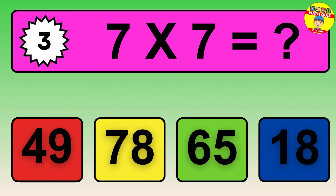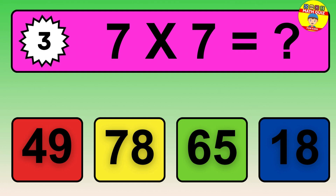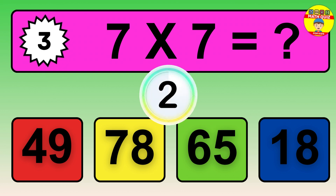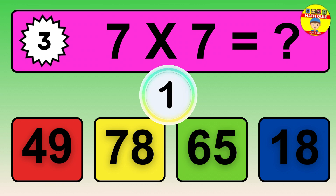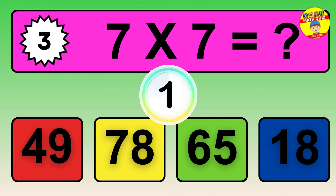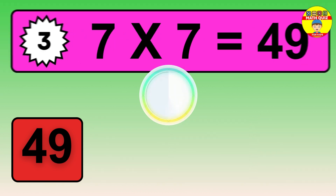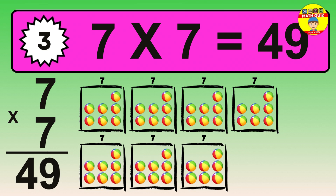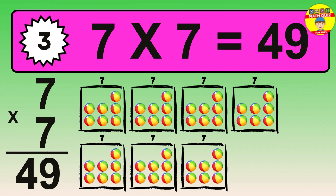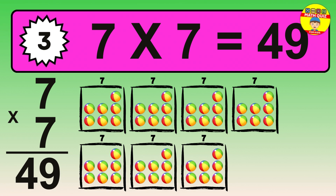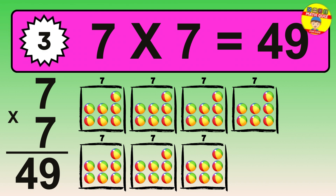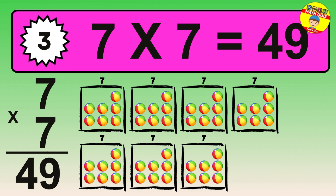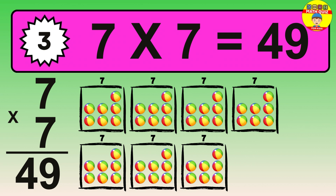Question 3. 7 times 7 equals what? The answer is 7 times 7 is 49. To calculate, we have 7 groups with 7 balls each one. So, how many balls do we have? 49 balls.